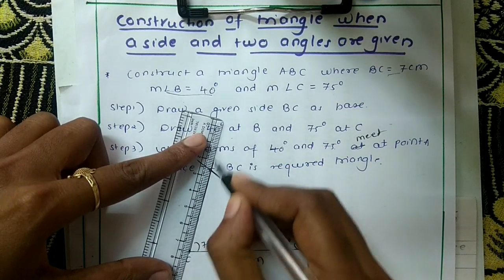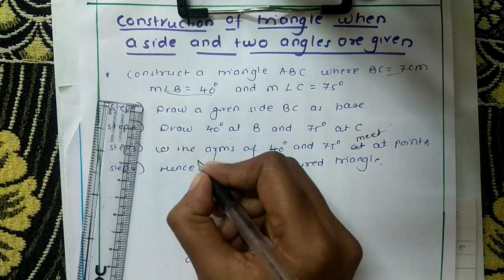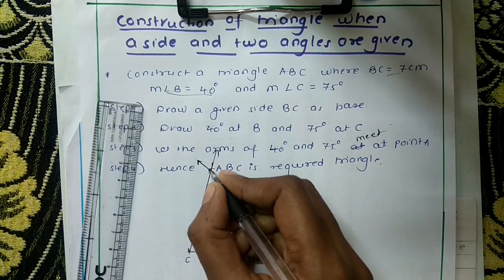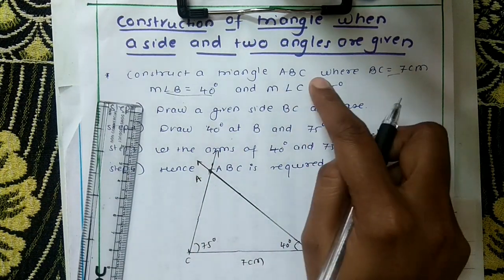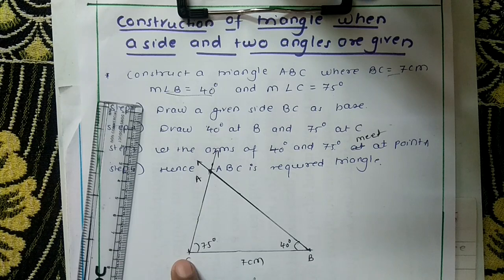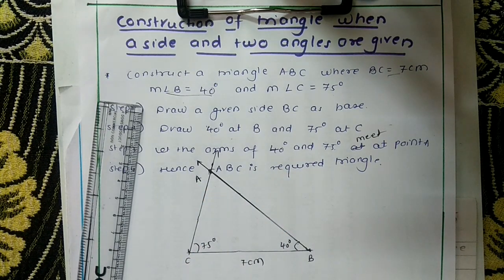Once you have drawn the 75 degrees, you can extend this line. This will be your point A, B, C, and A. Because your triangle is ABC, so this is the triangle to be constructed when a side and two angles are given.